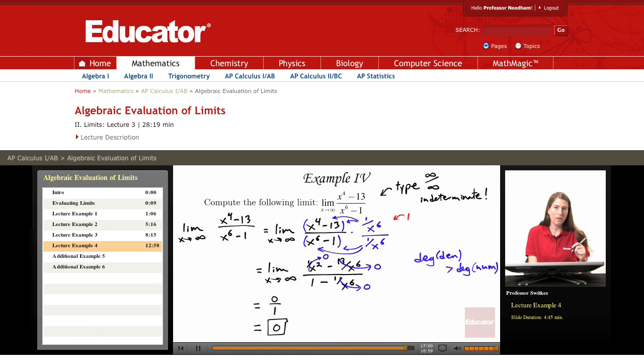If this seems strange to you, you could try a numerical example. For instance, let x equal a million, and look at a million to the fourth minus 13, and look at a million to the sixth minus 1. A million to the sixth minus 1 is way huger than a million to the fourth minus 13. And as a result, the ratio is going to be very small in size, very close to zero. And in the limit, the limit here is zero.